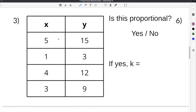To go from 5 to 15, we can multiply times 3. To go from 1 to 3, we multiply times 3 again. To go from 4 to 12, we multiply times 3 again. And then finally, to go from 3 to 9, we multiply times 3. So this is proportional. And the constant of proportionality for our equation is 3.